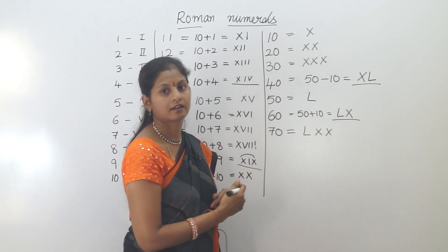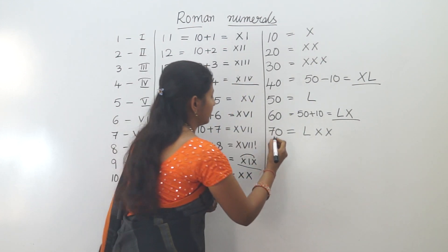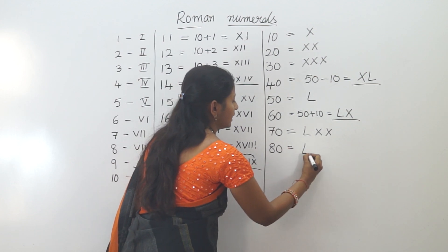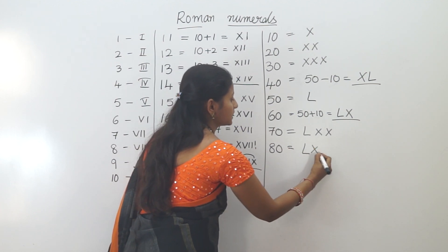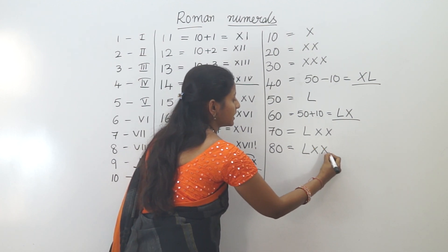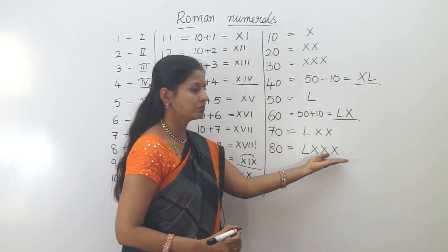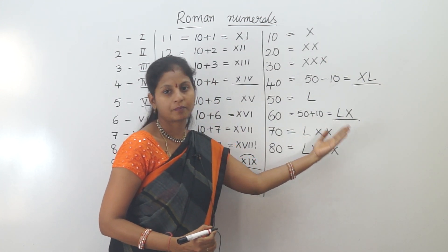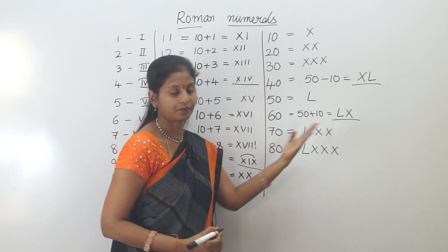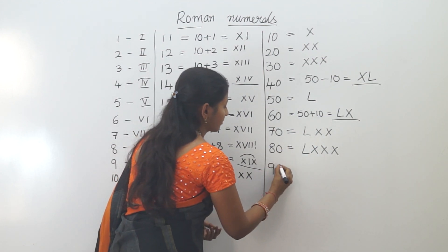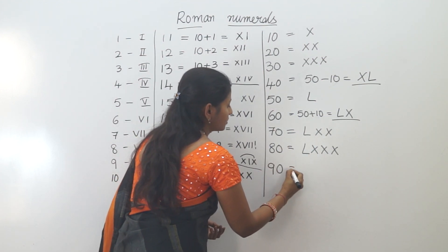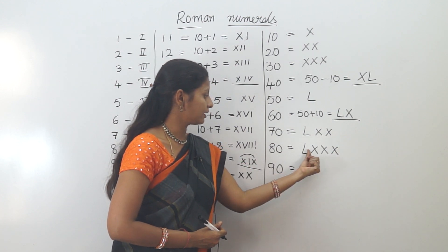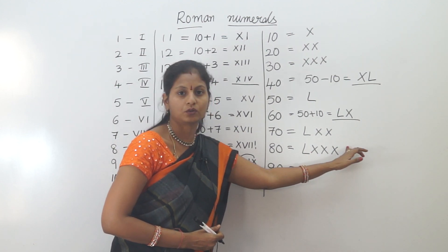Continuing: 60 is LX, 70 is LXX, 80 is LXXX. Next, 90. We count: 50, 60, 70, 80, 90.